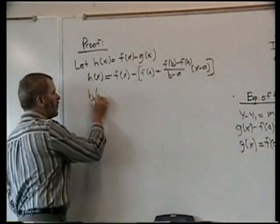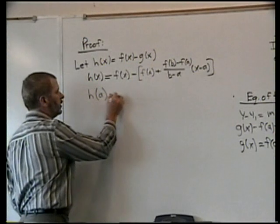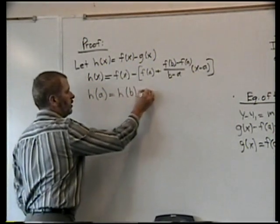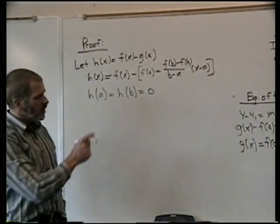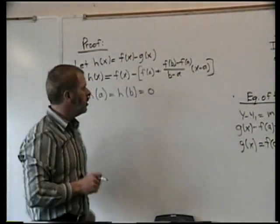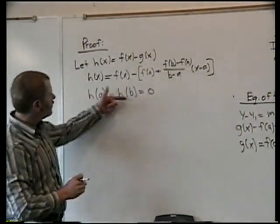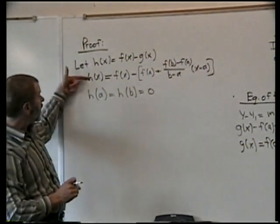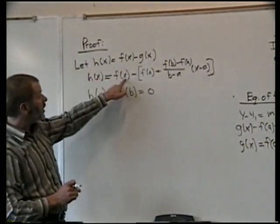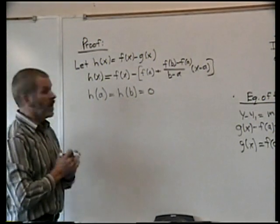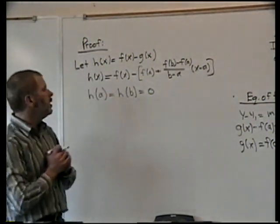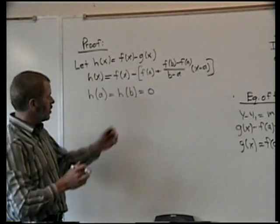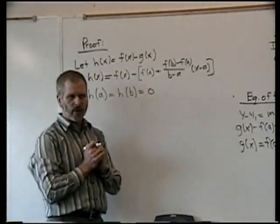We can note that h(a) equals h(b), which in this case would actually equal zero. We can see that in our picture, but we could also verify that by evaluating h(a) by putting a into the h function and simplifying we would get zero. Likewise, we could do the same thing with b.